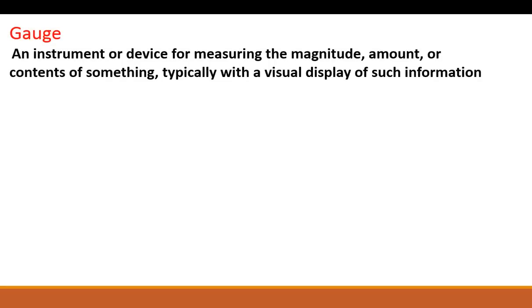First, let's start with a definition. What is a gauge? The technical definition: a gauge is an instrument or device for measuring the magnitude, amount, or contents of something, typically with a visual display of such information. It's something you measure things with, you get feedback from it, and from there you make your decision on whether it's a good or poor quality part, as this relates back to GD&T.